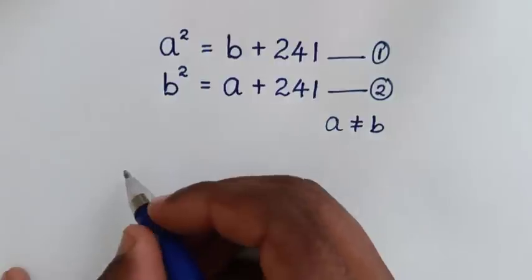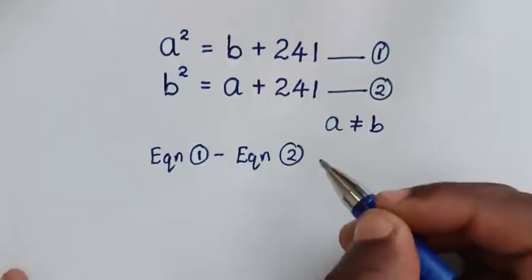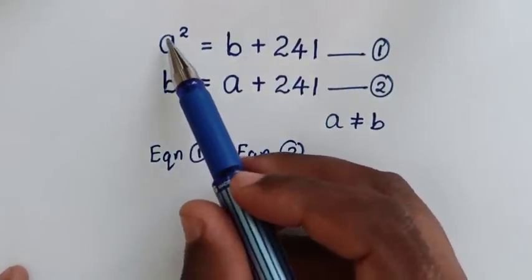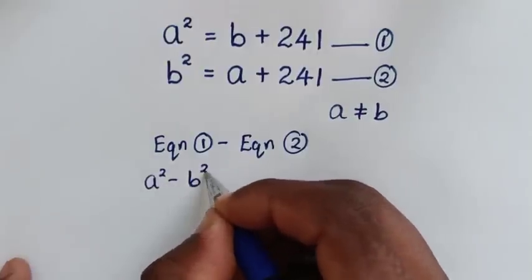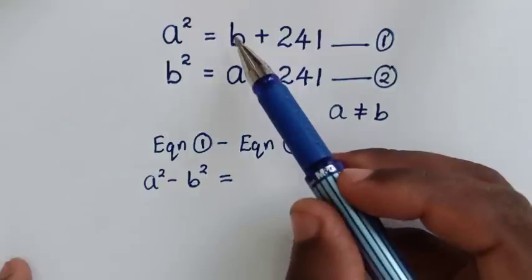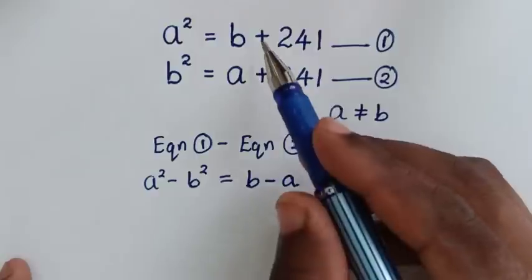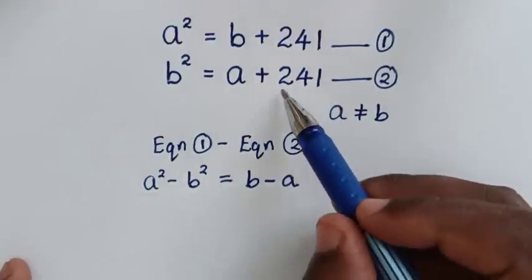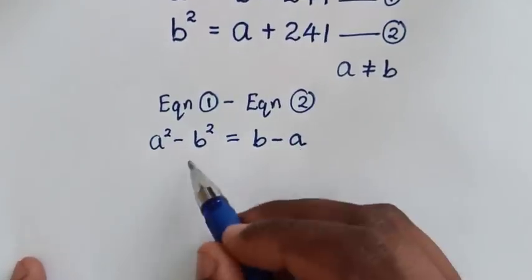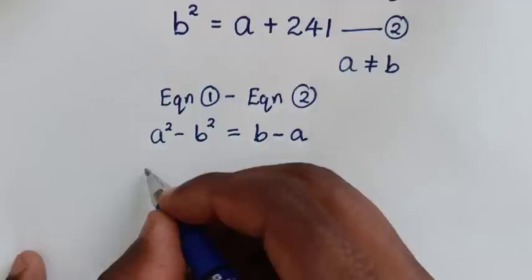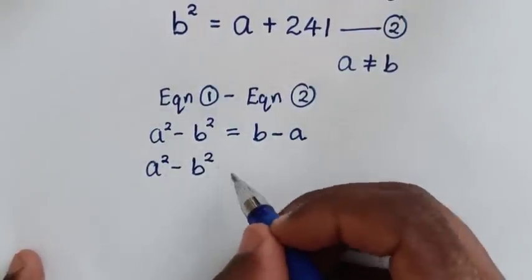In the first step we'll take equation 1 minus equation 2. From equation 1, on the left side it is a squared, minus b squared. So we write: a squared minus b squared is equal to. On the right side it will be b minus a, then plus 241 minus 241, which is 0. We then move the b minus a to the left side, giving a squared minus b squared plus a minus b.